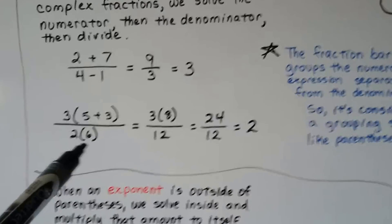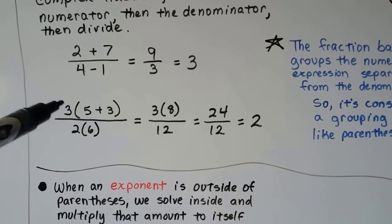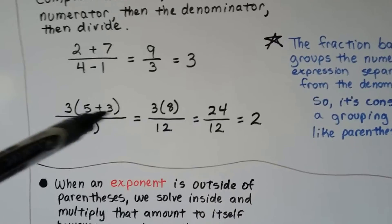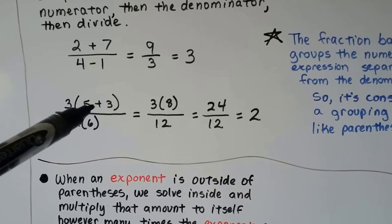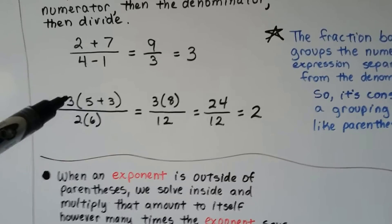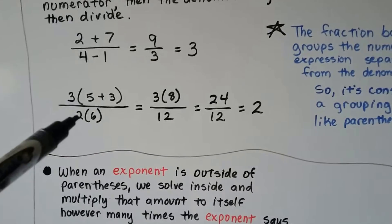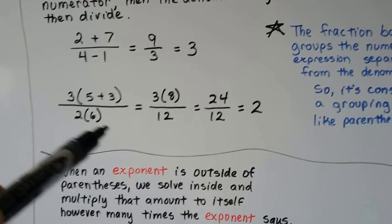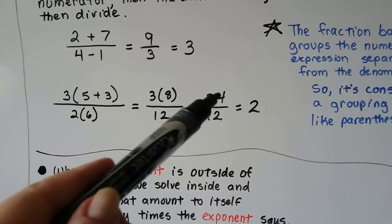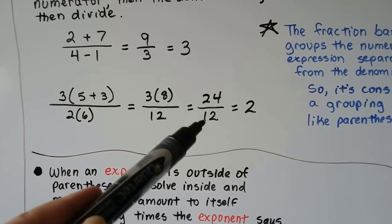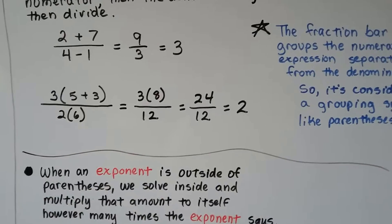For this one, we have the numerator. We have to do the addition inside the parentheses first, so we end up with 3 times 8. We can do 2 times 6 in the denominator and get 12. We end up with 24 divided by 12, which is 2.